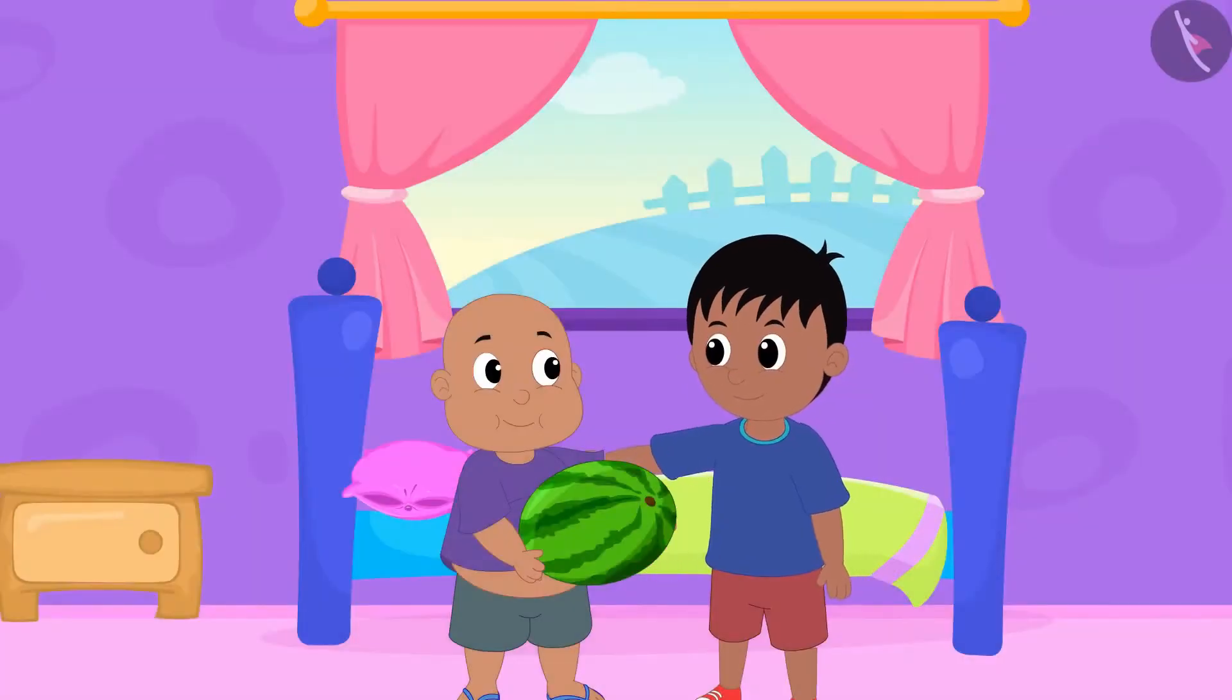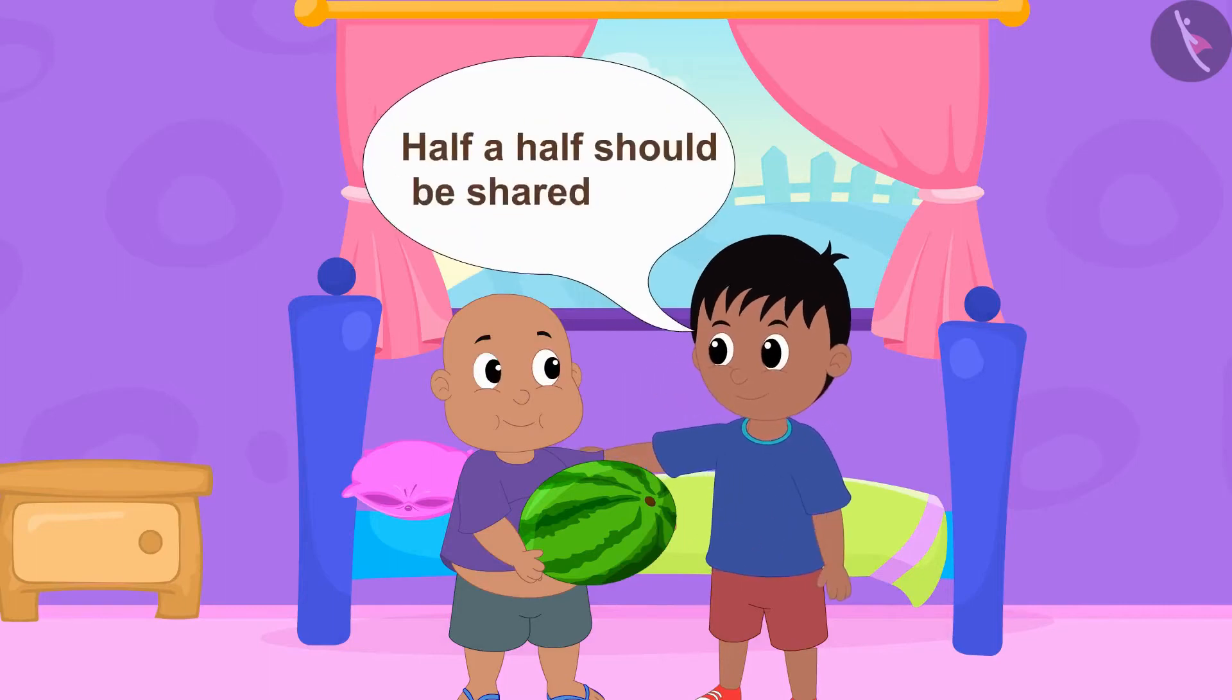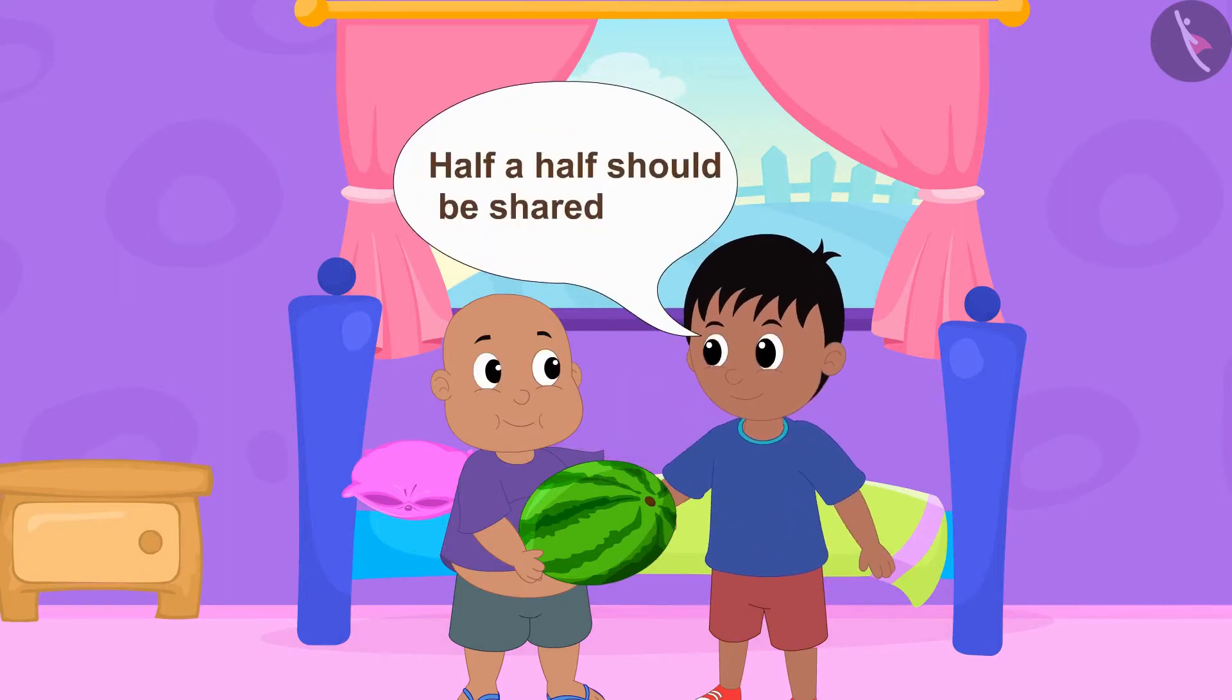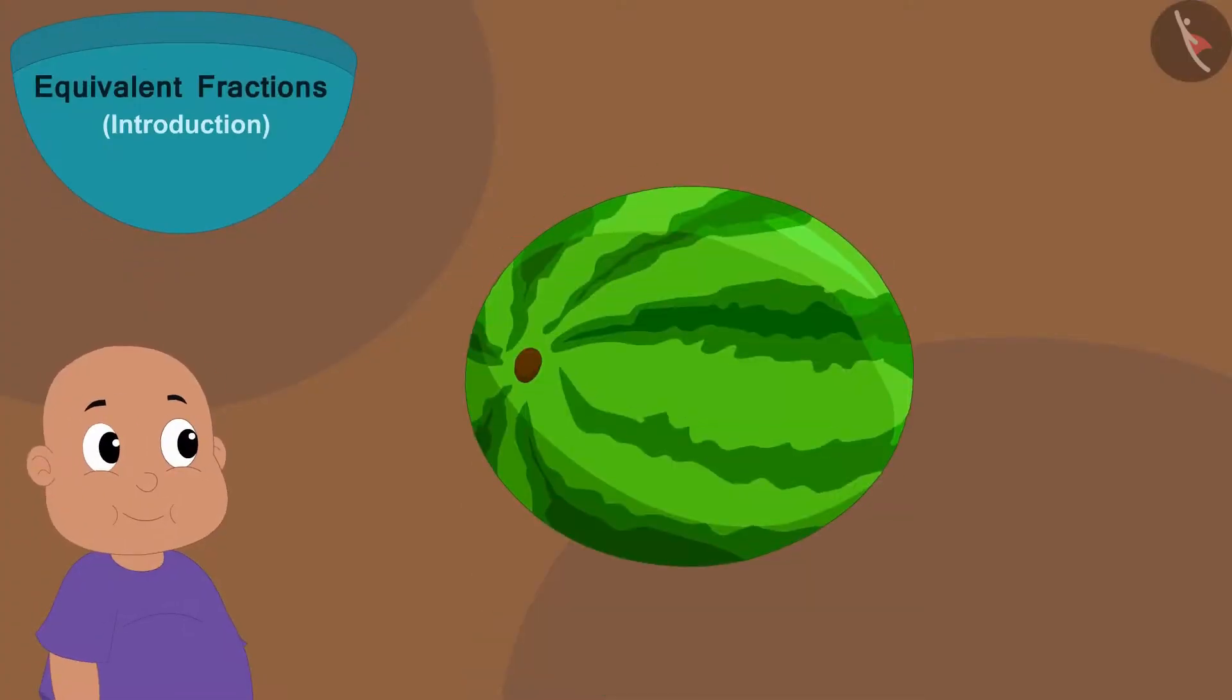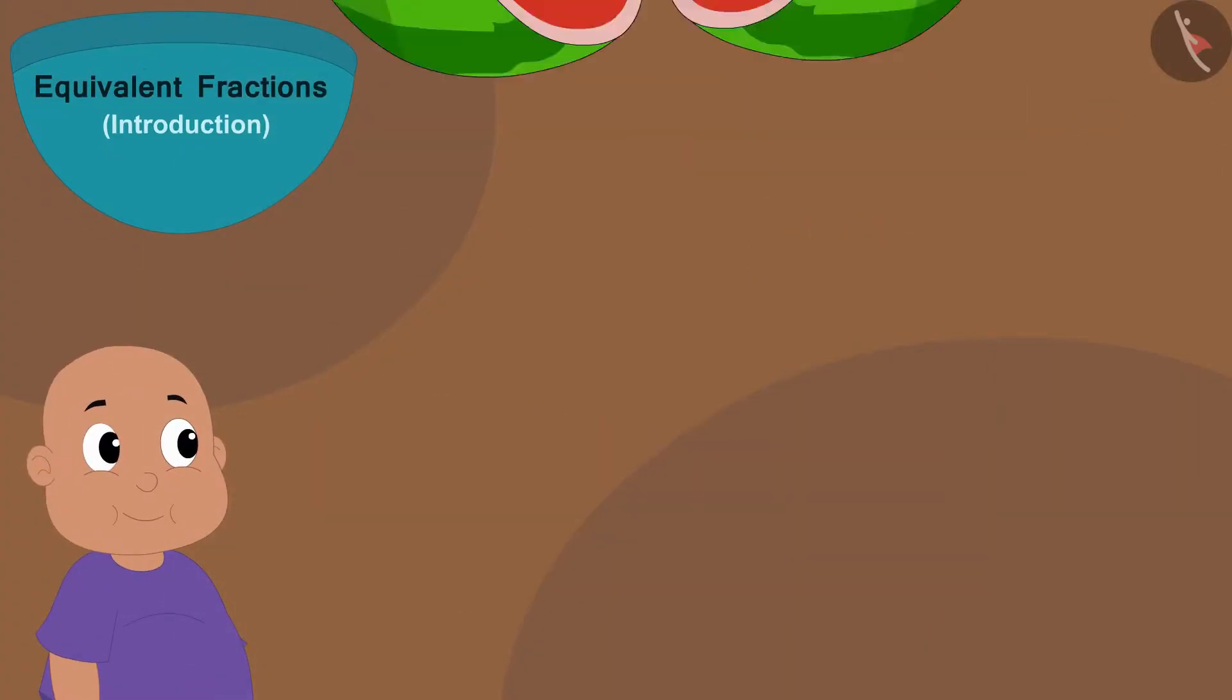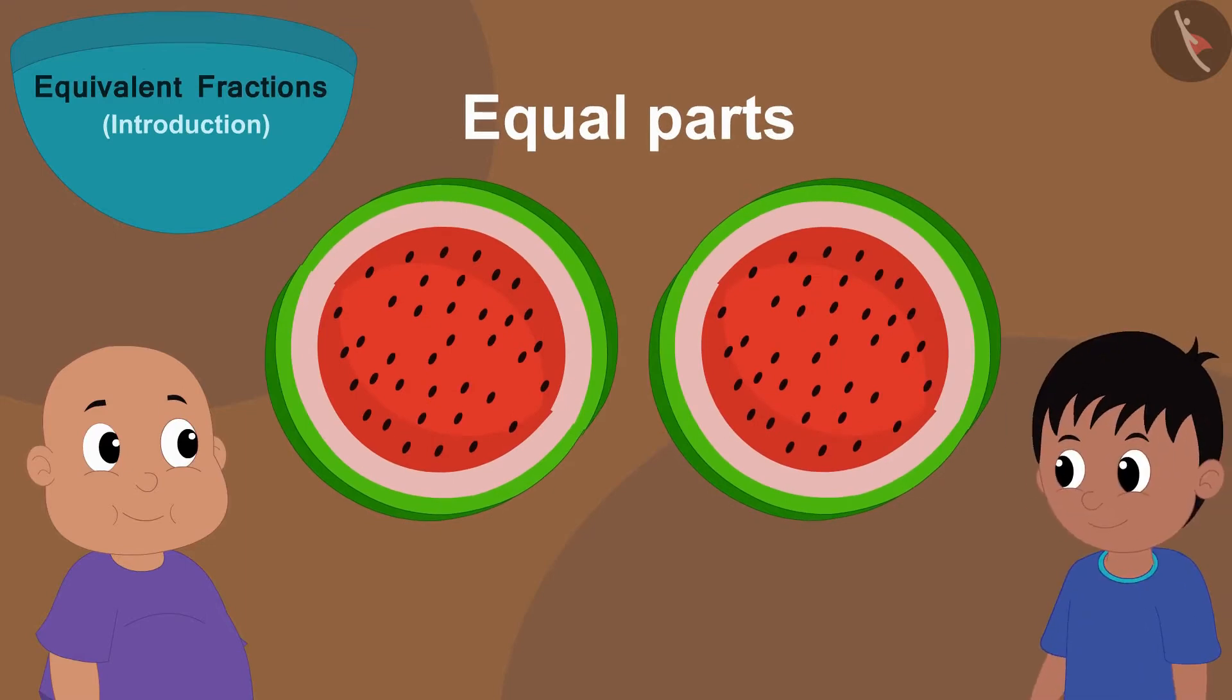Now, Raju told Bablu that he should divide the watermelon in two halves. Bablu cut the watermelon in two equal parts and gave one part to Raju.